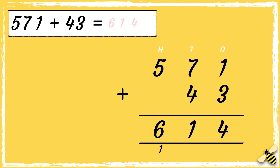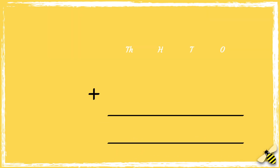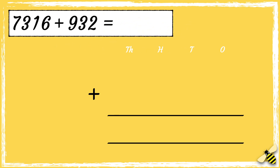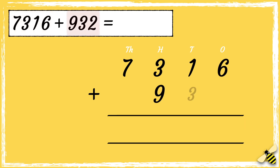The answer is six hundred and fourteen. Let's have a look at another one: seven thousand three hundred and sixteen add nine hundred and thirty two. We have seven thousands, three hundreds, one ten, and six ones. Then we have nine hundreds, three tens, and two ones. Now that we're set up, we're ready to add.